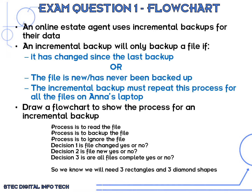Our first process is to read the file. We've got another process: back up the file. Another process: ignore the file. And we've got some decisions — is the file changed since the last backup? Has the file never been backed up? And are all the files completed, since the question says repeat for all files. So we know we've got three decisions and at least three processes, meaning we need three rectangle symbols and three diamond shapes.